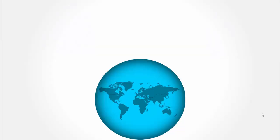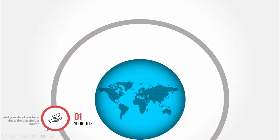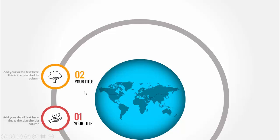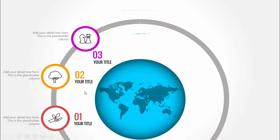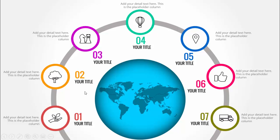In today's tutorial I'm going to show you how to make seven circle infographic options in PowerPoint. When I click, one semicircle comes in and then the first option appears. I've added an outline with different colors, an icon, and you can add detailed text along with the option number. Then comes the second, third, fourth, fifth, sixth, and seventh.